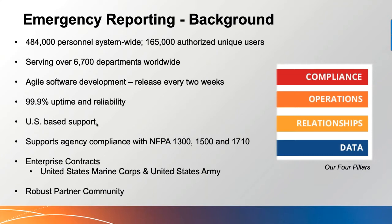Priority one tickets — say system down or CAD down — are considered high priority, something that is preventing you from using the system at all or incidents not being pushed from your CAD. It's important to note you always submit those tickets through the support portal using the support button in Emergency Reporting. There is a dropdown that allows you to select your priority, and priority one is monitored 24/7 but only through that portal — not through phone or email.